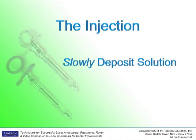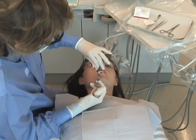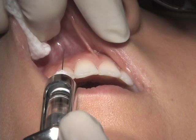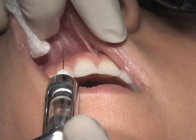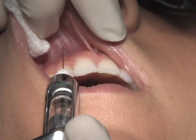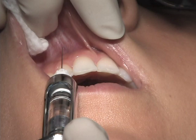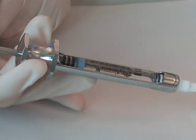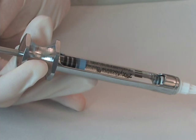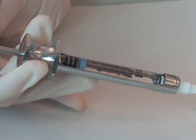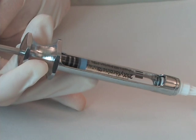Slow deposition of the solution is another critical step for administering atraumatic injections. To increase patient comfort and decrease the chance of toxicity, the anesthetic should be deposited no faster than one minute per cartridge. Procedures with longer durations will require more anesthetic, and some patients will require greater volumes even for relatively short procedures. Volumes recommended in the individual technique videos are minimal amounts to achieve pulpal anesthesia. The anesthetic cannot be deposited any faster than one minute per carpule.